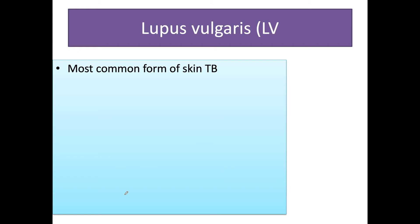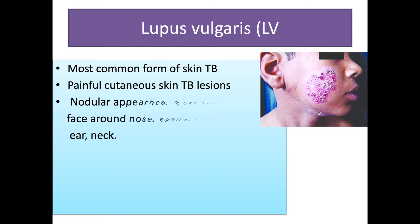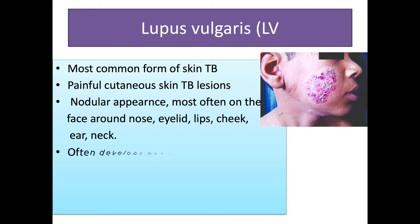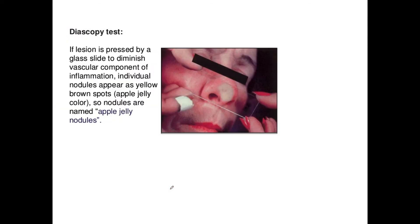Lupus vulgaris presents with painful cutaneous skin lesions. This clinical picture shows multiple nodular lesions over the cheek and neck. The lesion is generally seen in the head and neck area, involving the nose, eyelid, lips, cheek, ear, and neck. It often develops due to inadequately treated pre-existing TB and at the site of BCG vaccination. The Diascopy test is done where the lesion is pressed with a glass slide to diminish the vascular component of inflammation.